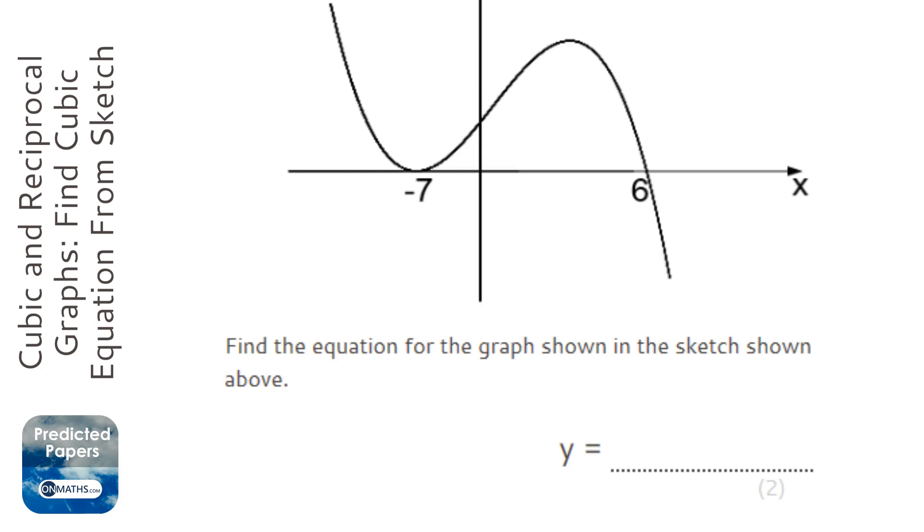Now, the problem with this is the normal method is to put down three brackets, and any solution it gives us in the graph, we write down the opposite, the inverse sign. So, for this one here, it would be x minus 6, because 6 take away 6 is 0, therefore that's a solution.